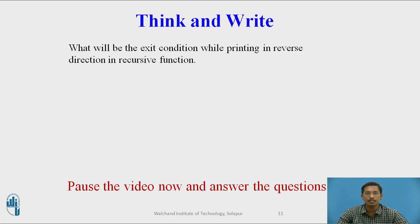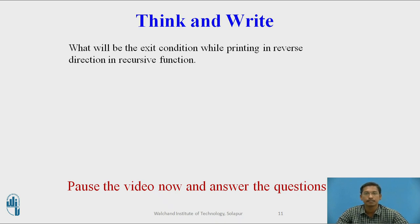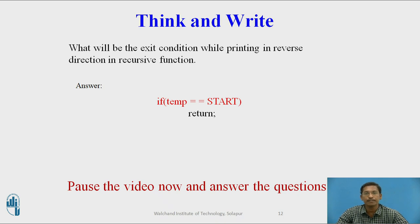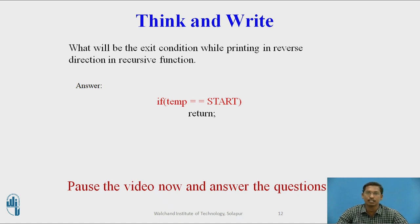Pause the video and answer: what will be the exit condition while printing in reverse direction using a recursive approach? The answer is: if temp reaches null, you return and stop. From when temp reaches the end, we start printing from the last node until temp reaches the start. This is the exit condition when writing a recursive function.